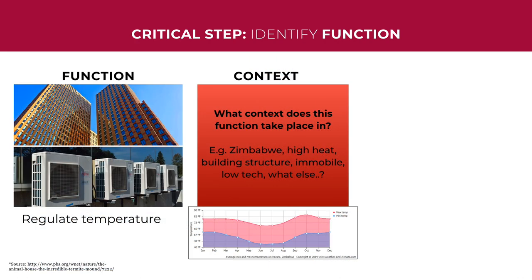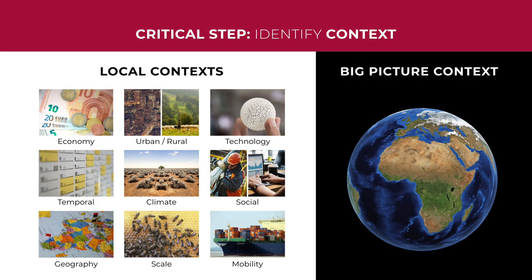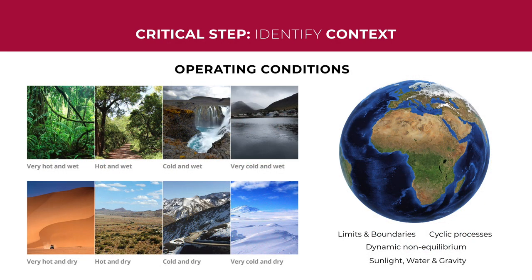In order to narrow down and focus your biological research, you need to also define what operating conditions or context your design needs to function within. Context is critical and includes both the local, socioeconomic and technological context, and in biomimicry design, we include the big picture context as well. You want to search for organisms and ecosystems that meet that function in the same operating conditions that your design will be functioning within.